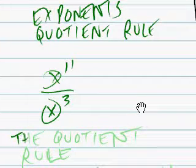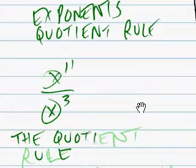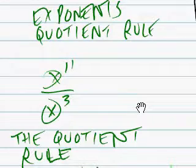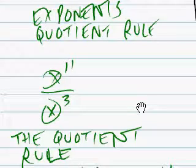The quotient rule states, pretty quickly, pretty simply, that the quotient rule is as follows: when dividing two powers that have the same base, subtract their exponents.